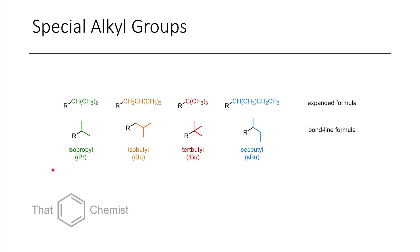What if we have a propyl group connected differently? If we connect to the propyl at the secondary position, we call that isopropyl — like isopropyl alcohol. When putting parentheses around a substituent in expanded formula, that means it's coming off of the carbon just discussed. If we extend by one carbon, this is an isobutyl group. Because butyl has an additional carbon, there are many different ways it could be connected: a tert-butyl group has three methyl groups, and a sec-butyl group moves one of those carbons. It's good practice writing out what these look like for more complex molecules.